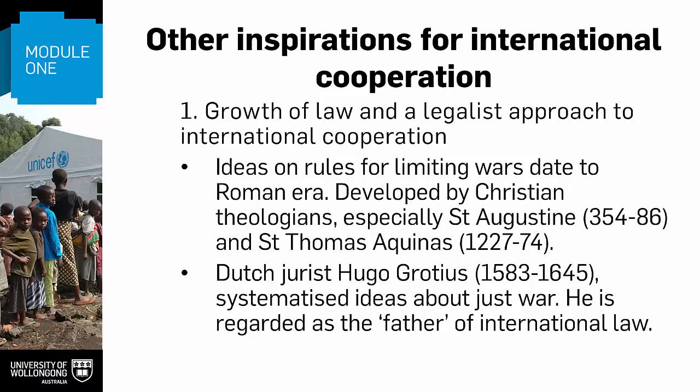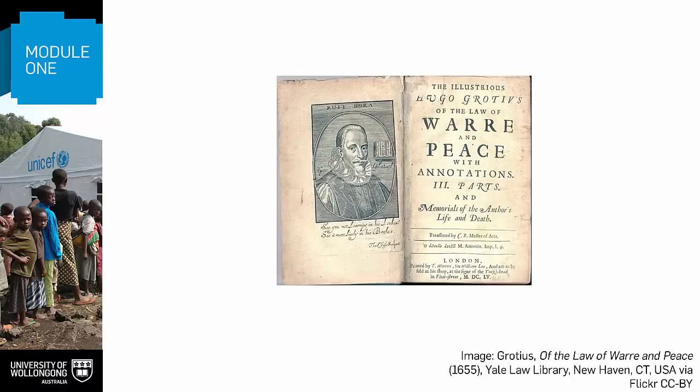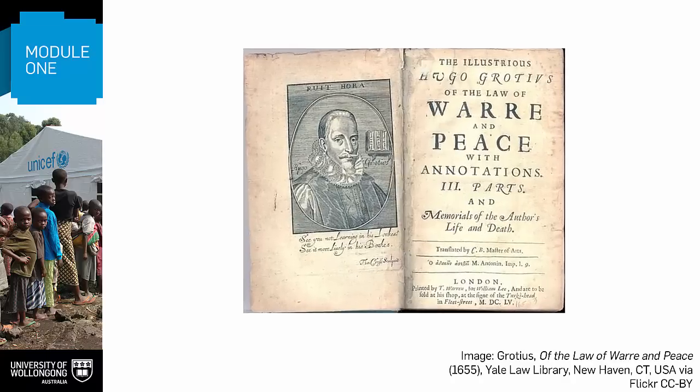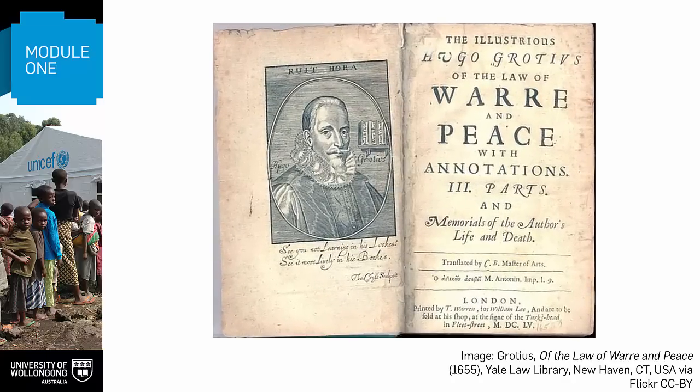However, it was a Dutch jurist of the late 16th and early 17th centuries named Hugo Grotius, who most effectively articulated just war frameworks and other legal issues, and indeed he's regarded as the father of international law. Grotius, in his 'On the Law of War and Peace', distinguished between the reasons for war, or jus ad bellum, and the conduct of war, or jus in bello.